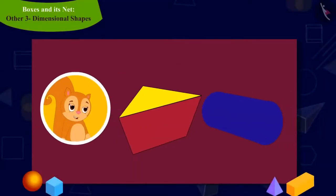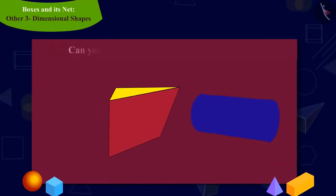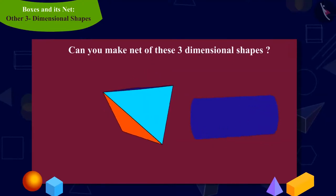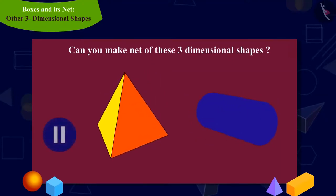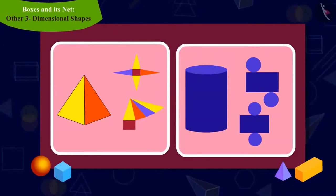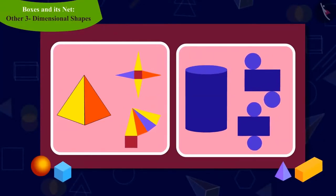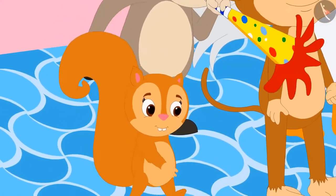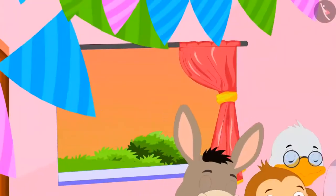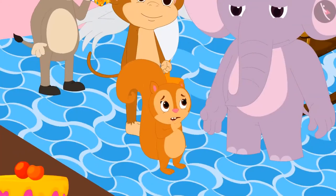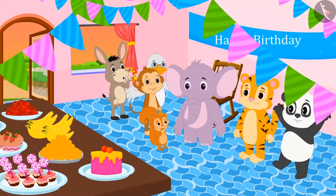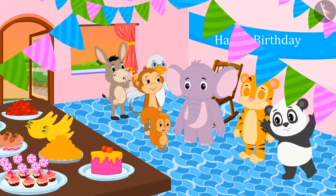Chanda saw two more such shapes in the party. Can you help Chanda make nets of these shapes? You can find the answer by pausing the video. Kids, you have found the right answer. You can also draw shapes in these ways. Chanda is now roaming around in the party, looking at other shapes and thinking how to make the shapes of their net. You should also look at the shapes of objects around you and try to make the shapes of their net.